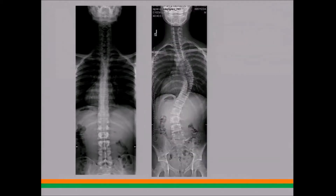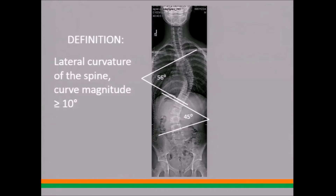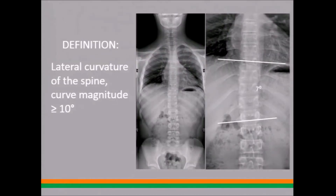Clearly this spine looked at from the front is not straight — this is a patient with scoliosis. We measure the curves by taking the most angled vertebra at the top and bottom of the curve and measuring the angle of intersection. The definition of scoliosis is that those angles be greater than 10 degrees. That's a formal definition from the Scoliosis Research Society. The 10-degree cutoff is important because small curves are very common, and we don't want to call everyone's spine scoliotic.